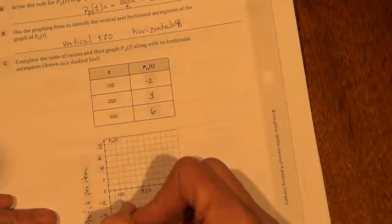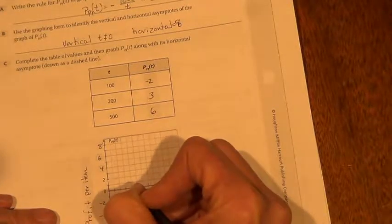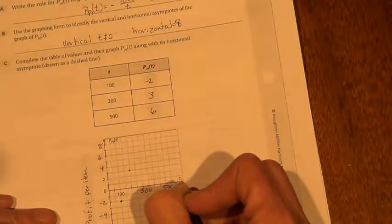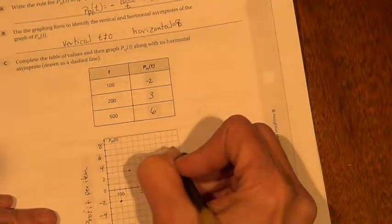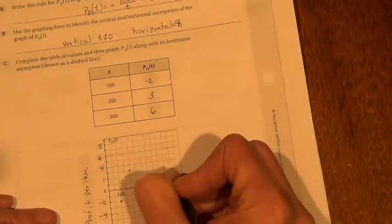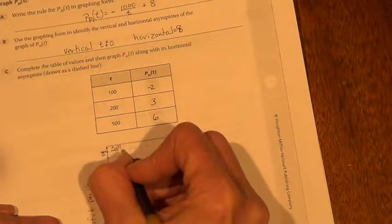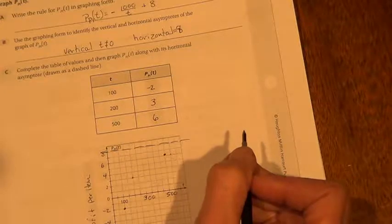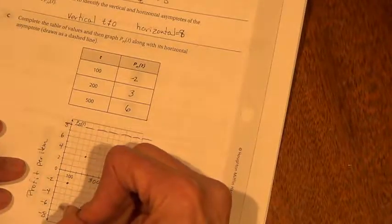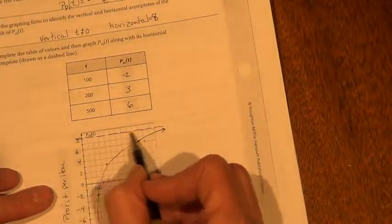So if we plot these points, we end up at 100 at negative 2. At 200, halfway between those two, we end up at 3. And at 500, we end up up here at 6. Now, remember our horizontal asymptote is right there. And we're trying to figure out what that means. It is at the $8 profit per item. And if we look, our curve is going like that. So what do you think that that means? It's obviously an asymptote.